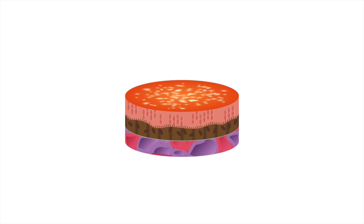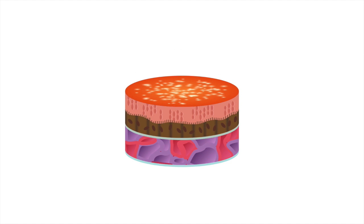Wet macular degeneration is the more severe and sudden form of the disease. It occurs when leaky blood vessels grow under the retina, resulting in scarring and sudden vision loss.